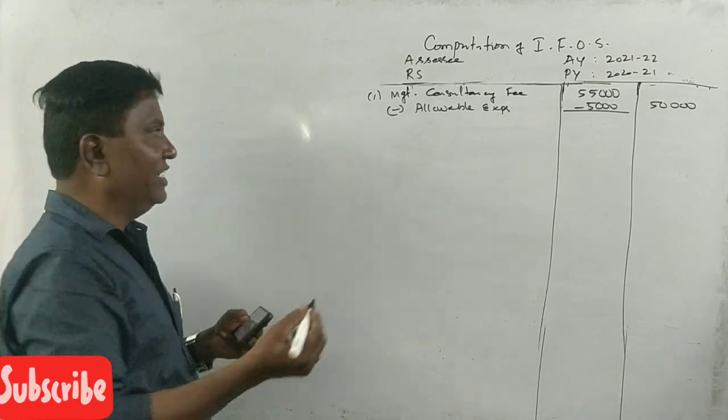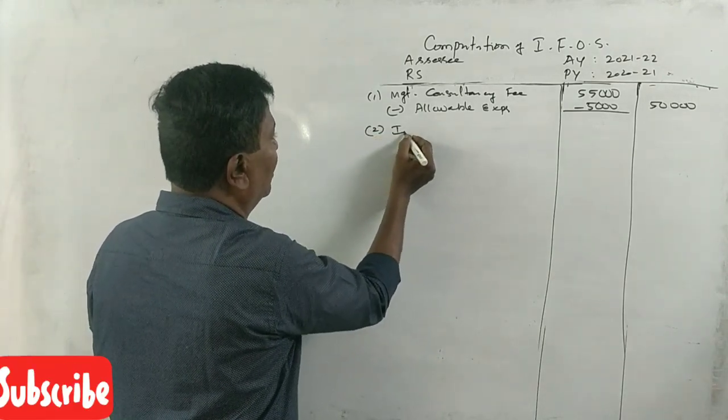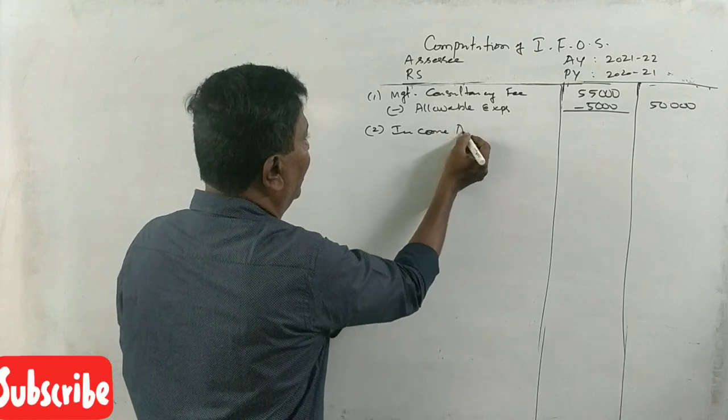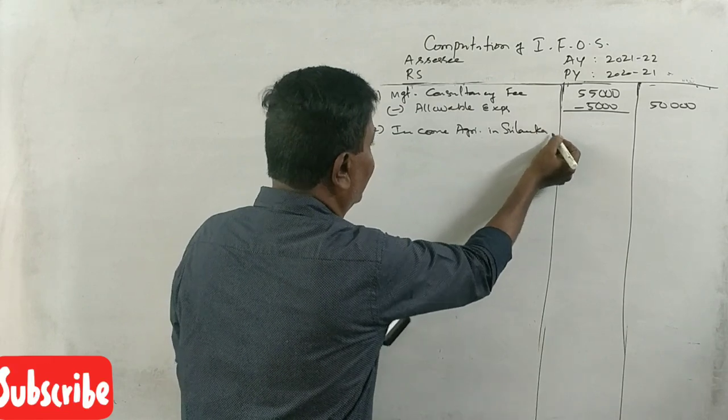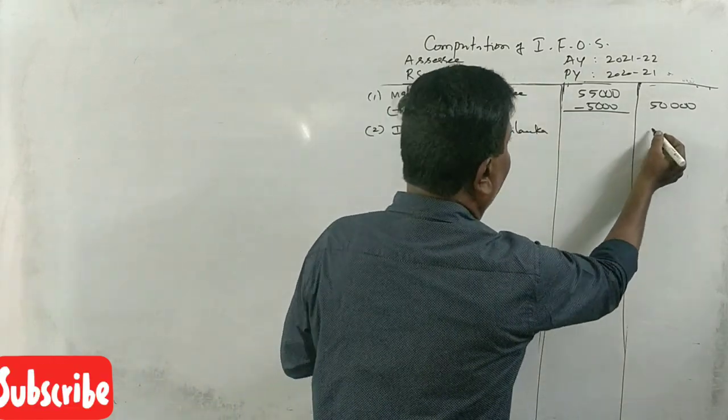Second point note, income from agriculture in Sri Lanka, fully taxable. Income from Agri in Sri Lanka, 20,000 fully taxable.